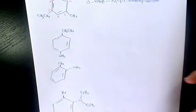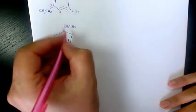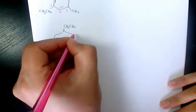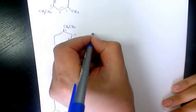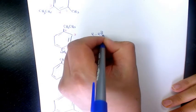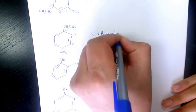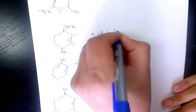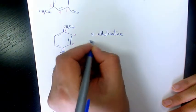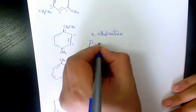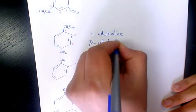Next one: we have the amino group here, so we start numbering — it's going to be two, three, and four. So it's going to be 4-ethylaniline, or you can also say that is para or p-ethylaniline.